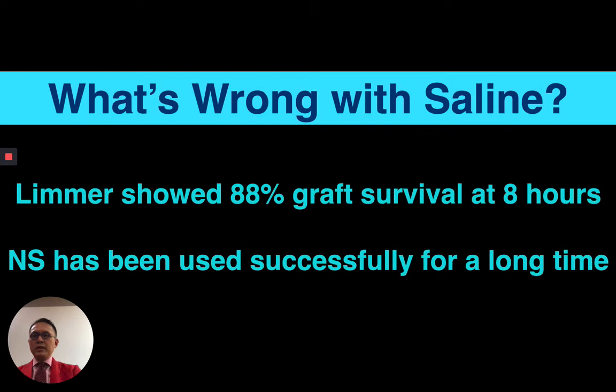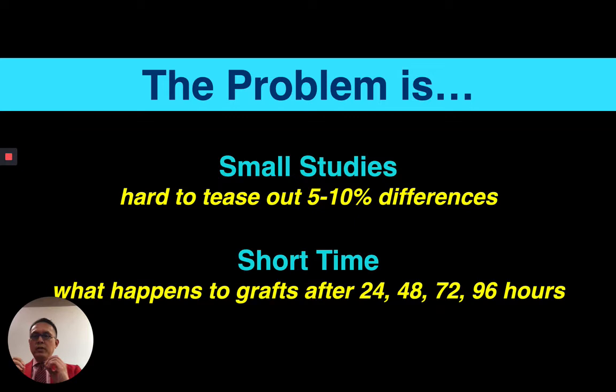What's wrong with saline? It's been used for decades. Limmer showed 88% graft survival, back in the FUT strip days when grafts were hardier at eight hours. I'm not saying you can't use saline — I've used it with great success. But the problem is there are really only small studies. It's hard to tease out differences of five to ten percent, and studies involve short time out of body. You may say you won't leave a graft in for 24, 48, 72, or 96 hours.